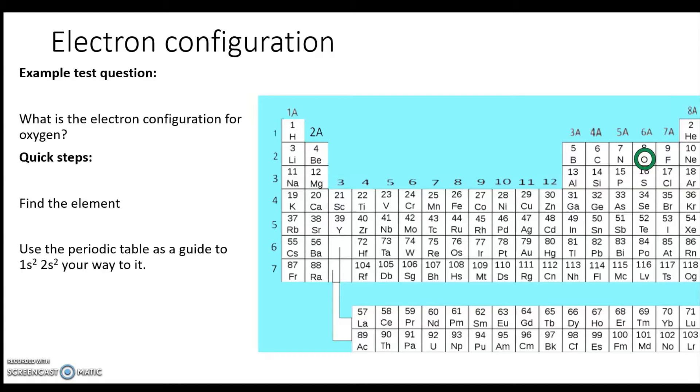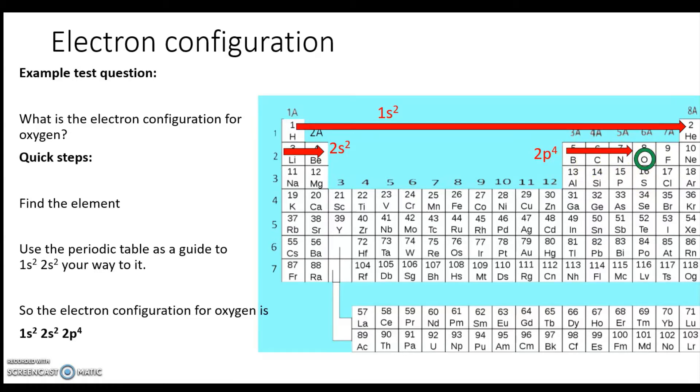And then the next one is to use the periodic table as a guide to 1s² 2s² your way to it—you probably didn't know that's a verb, it is now. So we go 1s² 2s² and then 2p⁴, and we just count over to make sure: one, two, three, four. So the electron configuration for oxygen is 1s² 2s² 2p⁴. Now I didn't include the shortcut on this one, but I'm going to have it on much of the rest of them.